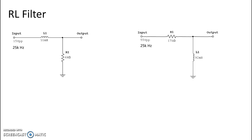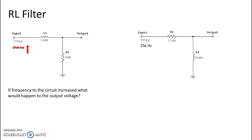If frequency to the circuit increased, what would happen to the output voltage? We're looking at this RL filter on the left, and frequency is going up. We know that frequency is going to affect the ohmic value and therefore the voltage of our inductor, because it's going to make the ohmic value of our inductor increase. Because the ohmic value of the inductor increases, we are going to see its voltage drop increase — remember back in series-parallel circuits when we talked about faults, we said that when ohmic values go up the voltage drop of the component will follow.